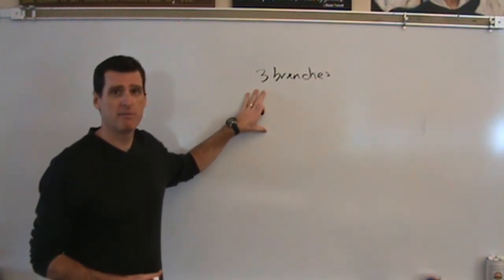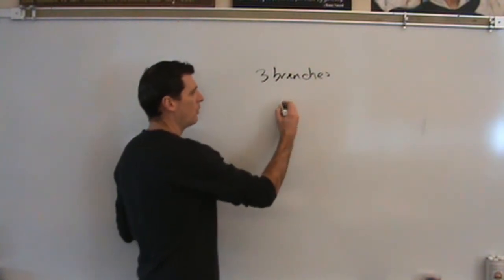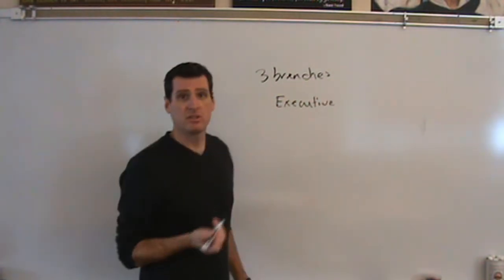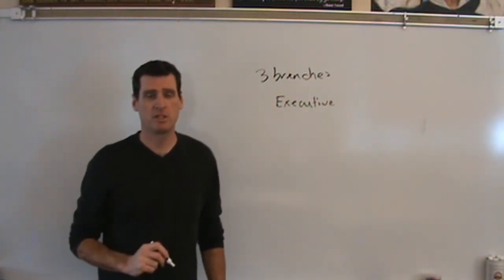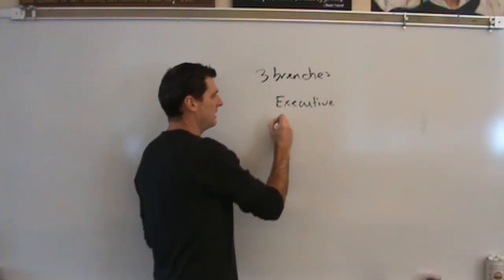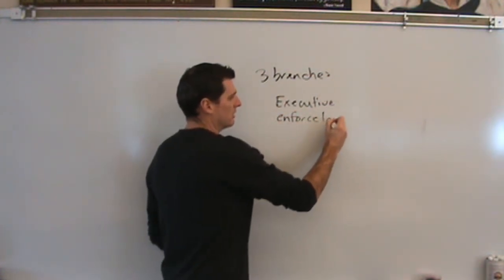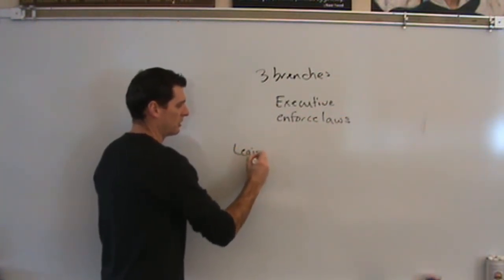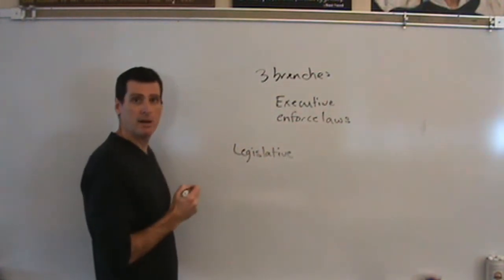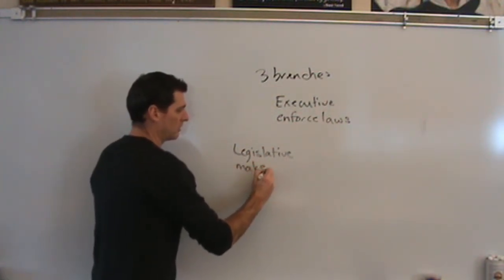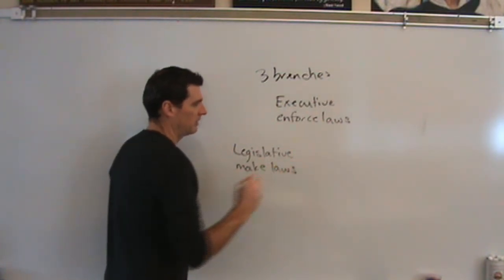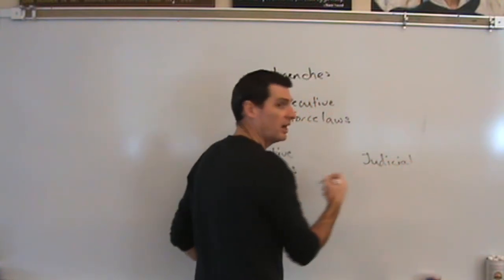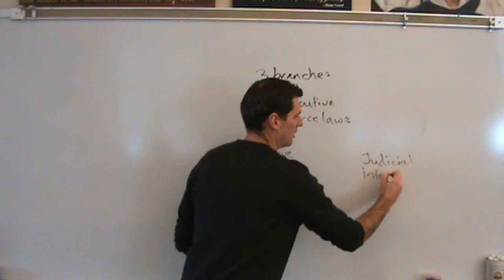The three branches of government were created like this. You would have one branch, the executive branch — the President of the United States and all of the bureaucracy that works for him — and their job is to enforce the laws. You also have the legislative branch, whose job is to make the laws. And then you have the judicial branch, whose job is to interpret the laws.